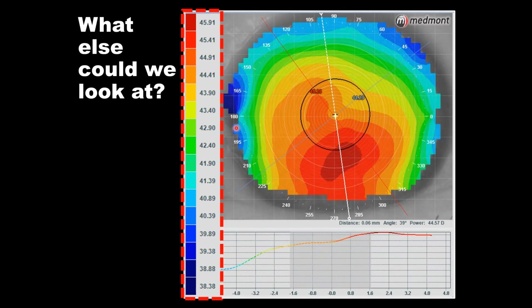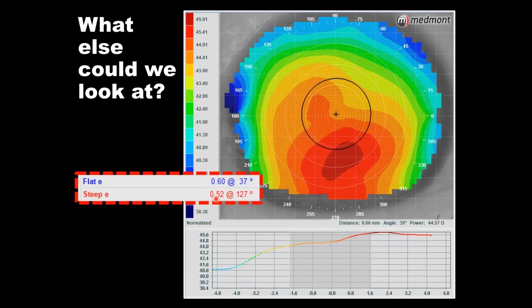When thinking about whether it's regular or irregular, go to your axial topography in a normalized scale — normalized meaning it adjusts the scale specific to the topography displayed. In this case, the steepest we read is almost 46, flattest is 38. What about eccentricity? E-value is a measure of the rate of corneal change from center to periphery. If the cornea is keratoconic with a steep volcano, we'd see ultra-high eccentricity. But this patient shows a pretty normal 0.6 e-value.